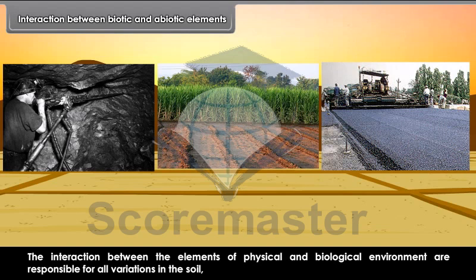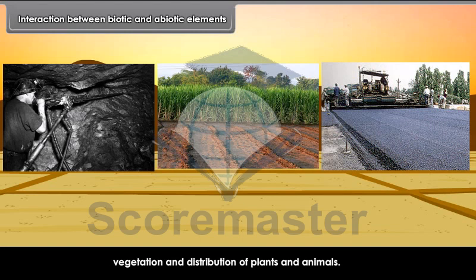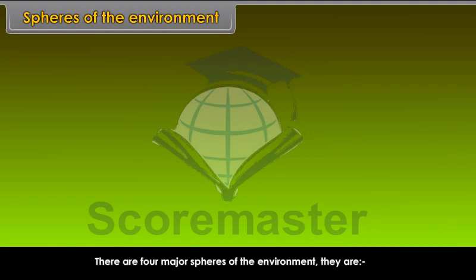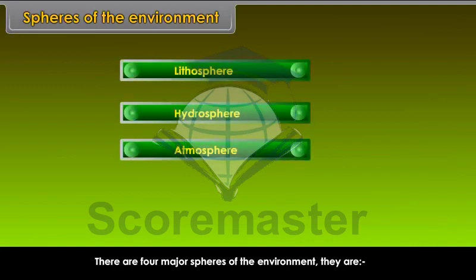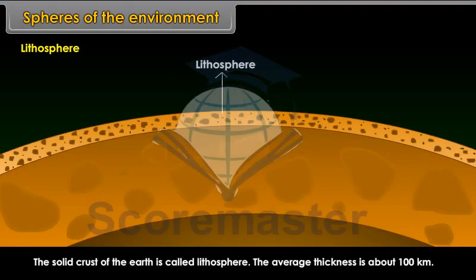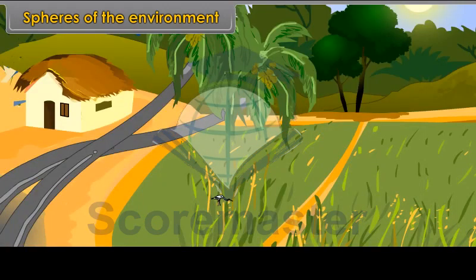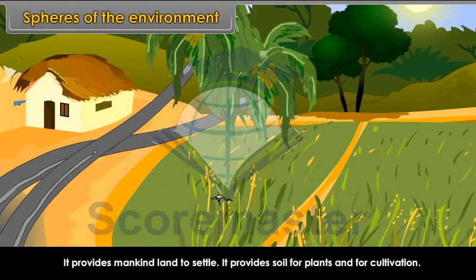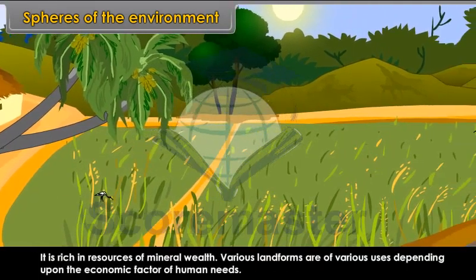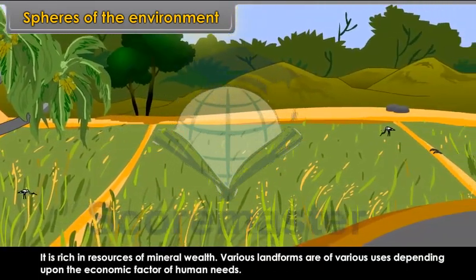Spheres of the environment. There are four major spheres: lithosphere, hydrosphere, atmosphere, and biosphere. Lithosphere. The solid crust of the earth is called lithosphere, with an average thickness of about 100 km. Importance of lithosphere: it provides mankind land to settle, soil for plants and cultivation, and is rich in mineral wealth. Various landforms are of various uses depending upon the economic factor of human needs.